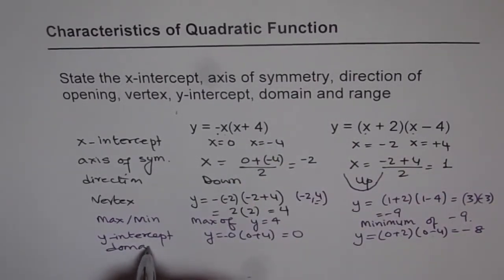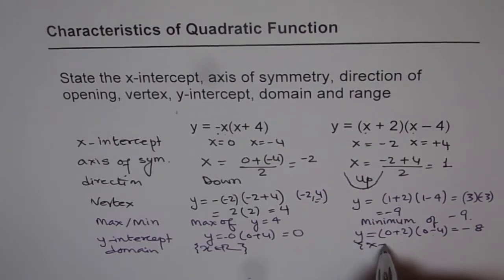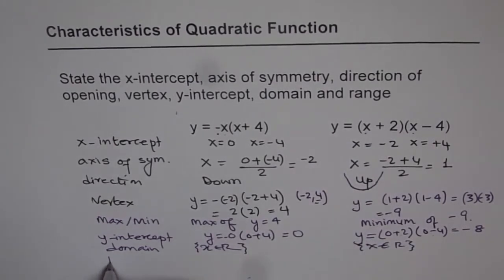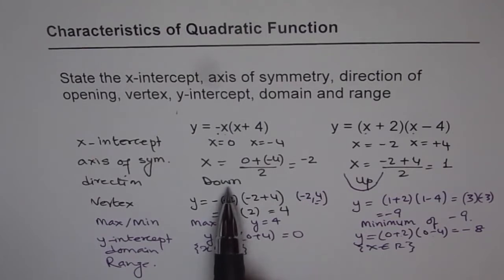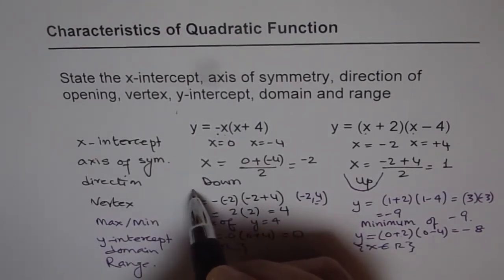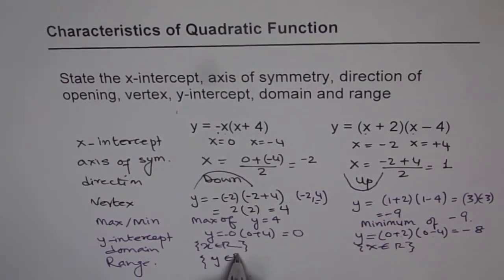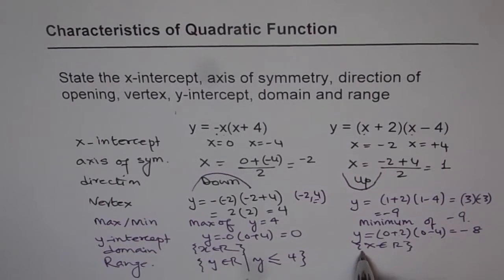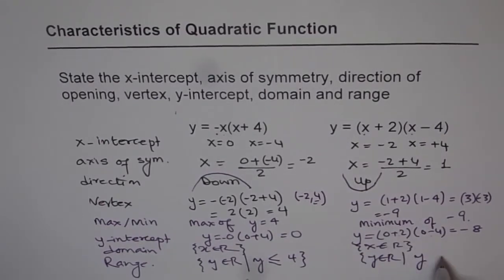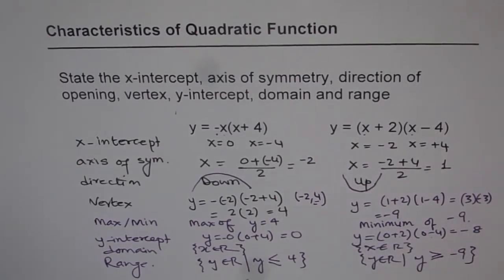Domain. Domain of all parabolas is x belongs to real numbers. There is no restriction on the domain of the function. But range is restricted. It really depends on the direction of opening and the vertex. So the first equation is opening downwards. So here y is less than the maximum value. So y belongs to real numbers so that y is less than and equal to the maximum value, which in our case was 4. And in this case, range is y belongs to real numbers, but y is greater than and equal to the minimum value of minus 9. So like this, you can get all your characteristics.